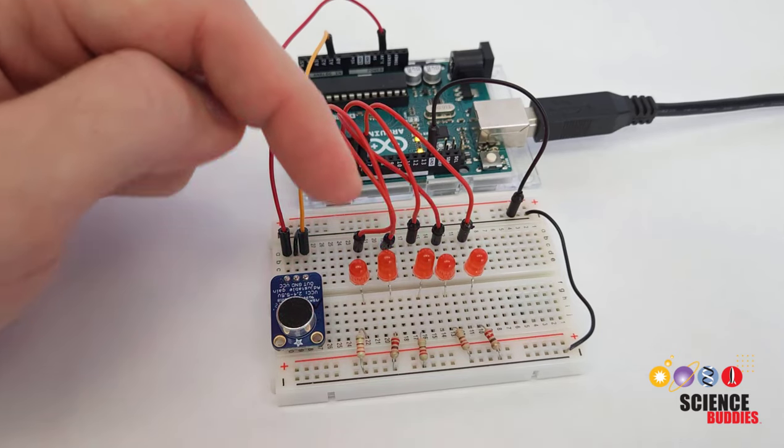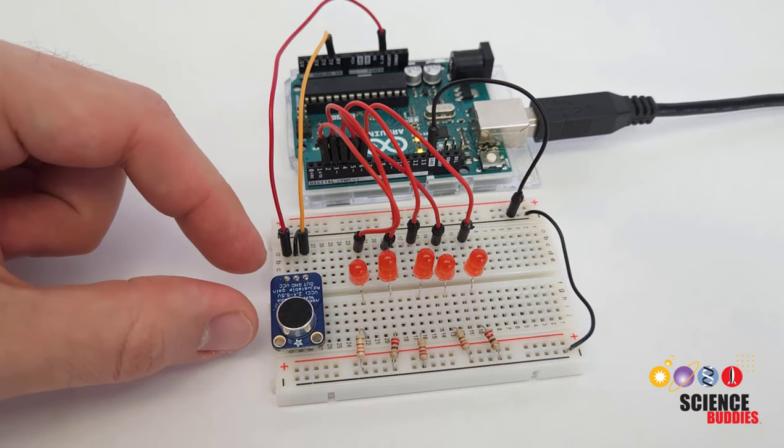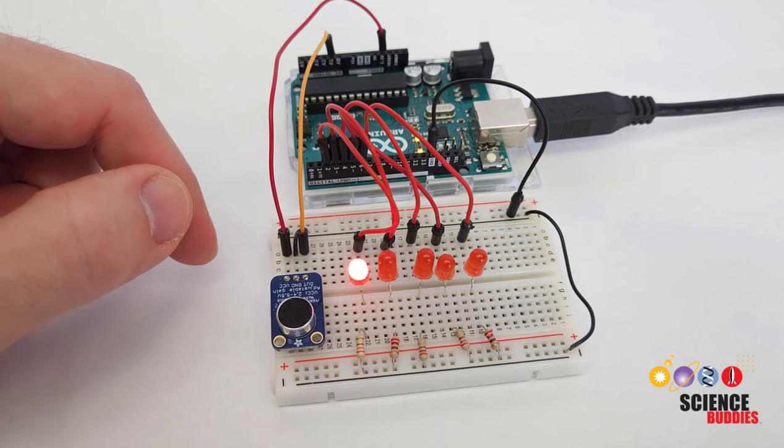You can see that what I've done here is program the Arduino so it lights up the LEDs based on the amplitude of the detected sound. Let's take a look at the code to see how that works.